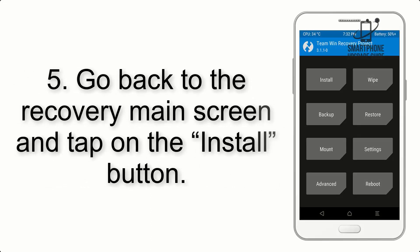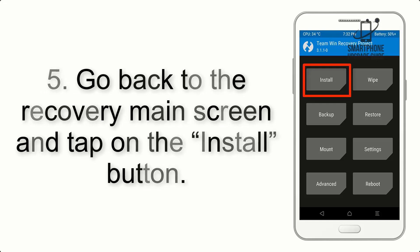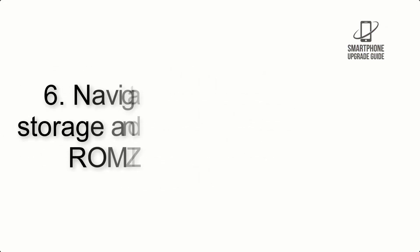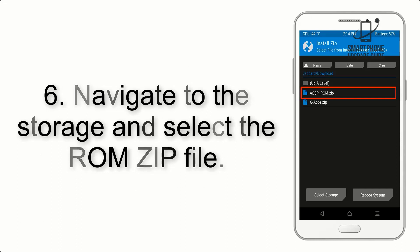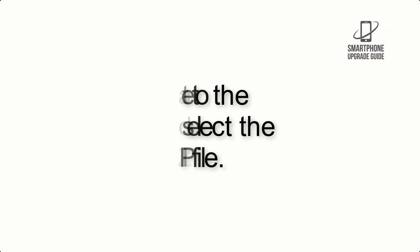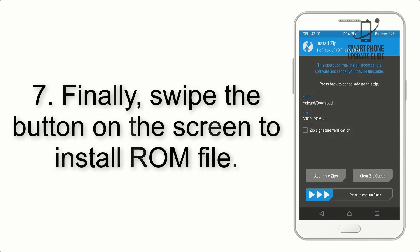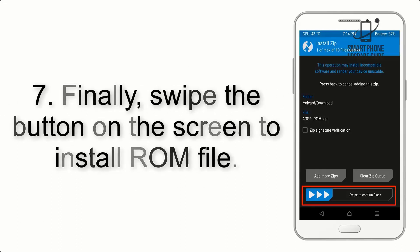Step 4: Swipe the button to wipe the device. Step 5: Go back to the recovery main screen and tap on the Install button. Step 6: Navigate to the storage and select the ROM zip file.